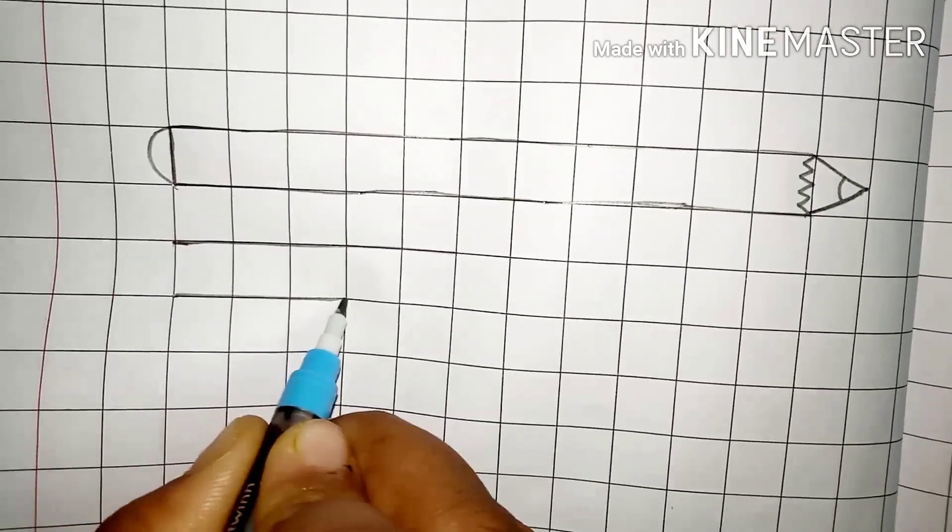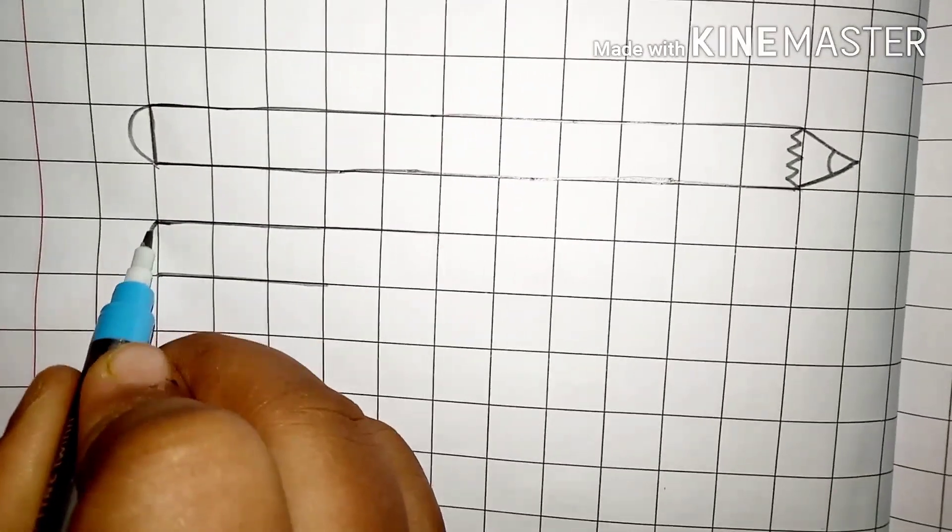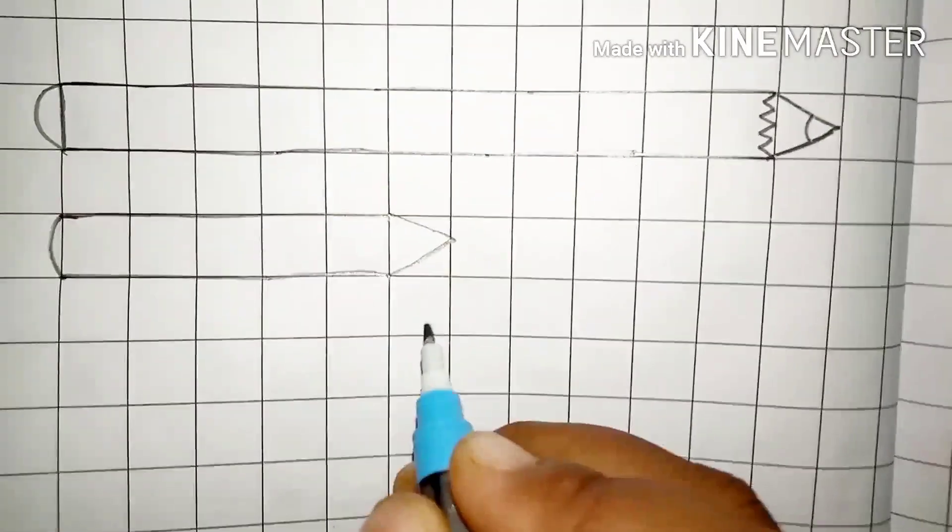Then, draw a short line. Shorter than the earlier picture. Short line like this.